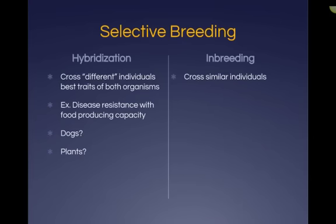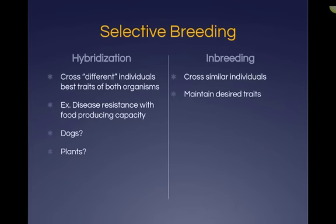The opposite of hybridization is inbreeding. You may have heard of inbreeding in humans, but in breeding, the idea is that we are crossing similar individuals. For hybridization, we seek new traits from two different individuals. With inbreeding, we've found something we like in a breed and we want to maintain that desired trait by crossing similar individuals. For example, if I have a really fast racehorse and breed it with another really fast racehorse, we hope the offspring will also be fast. This is why purebred dogs are so common — breeding two golden retrievers gives you a purebred golden retriever.